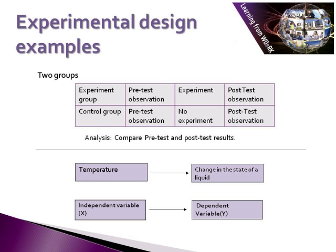Here we have an example of a classic experimental design, using a change in temperature to examine the change in the state of a liquid. In this case, temperature is the independent variable — the variable that has caused an impact — and the change in the state of the liquid is the variable that feels the effect, so it is the dependent variable.